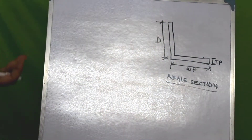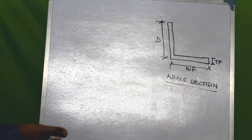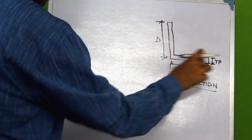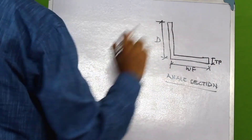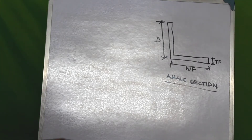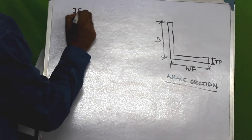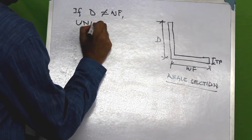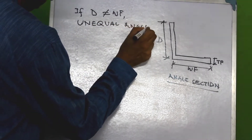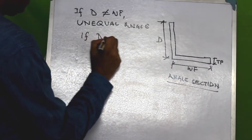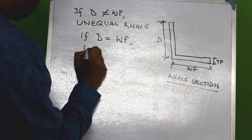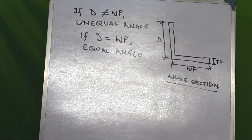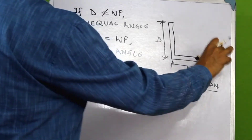In this session we will continue to explore some more common steel section types. The first type of section we will look at today is the angle section. An angle section looks like an L. If the two legs of the angle are unequal — that is, if D is not equal to WF — then it is called an unequal angle. If D is equal to WF, then it is called an equal angle. Irrespective of whether the angle is equal or unequal, the thickness remains the same, so we have only one value of thickness.